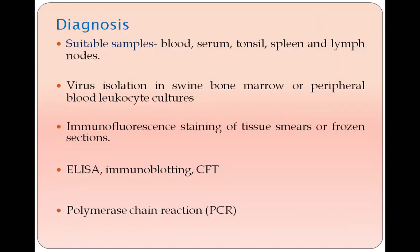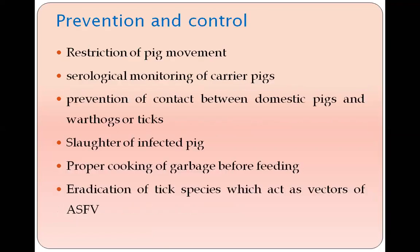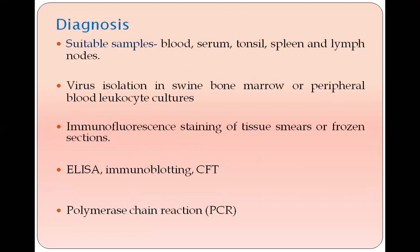Diagnosis can be made based on clinical symptoms, but correct diagnosis requires isolation or other confirmatory measures. Suitable samples include blood, serum, tonsils, spleen, and lymph nodes. Virus isolation can be done in swine bone marrow or peripheral blood leukocyte cultures. Immunofluorescent staining of tissue smears or frozen tissue can be performed. ELISA, immunoblotting, and CFT can be used for diagnosis, and PCR is also used.